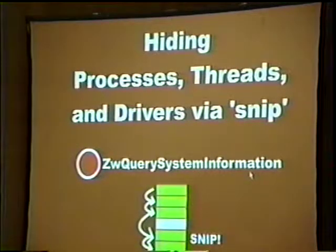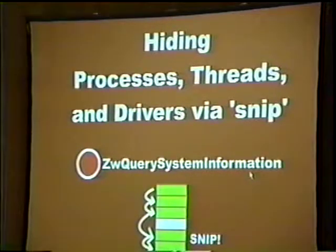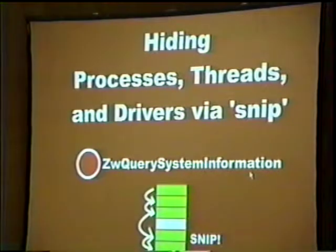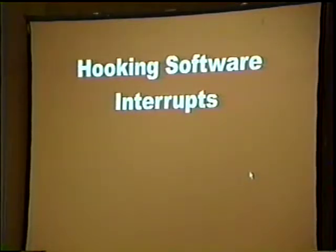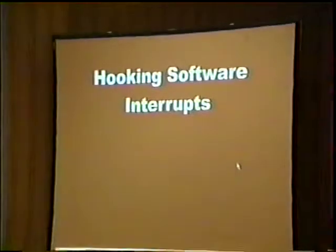That entire demonstration is exactly the same when hiding processes, threads, and drivers. There's a call — ZwQuerySystemInformation — that returns an array of structures saying 'this is a process named X,' 'this is a thread in that process,' and so forth. Using the same snipping trick, you can snip out an entry and it disappears from Task Manager, PS, or whatever. I have the rootkit installed here on this box and I'll show you the process hiding in a moment. The website is www.rootkit.com, and the full source code is available. There's some new stuff I'm going to show today that will be available very soon.